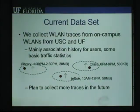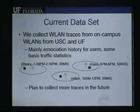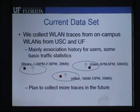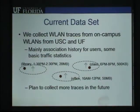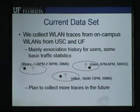For example, in this illustration we show a user associating with three access points during the course of a day. We know the location of each access point, the starting time and ending time of user association, and the amount of traffic sent or received during the session. This information provides us the basic time-location information for the user. In the future, we plan to collect more detailed traces by not only using the existing wireless network infrastructure, but also implementing some prototype behavior collection codes on the mobile devices.